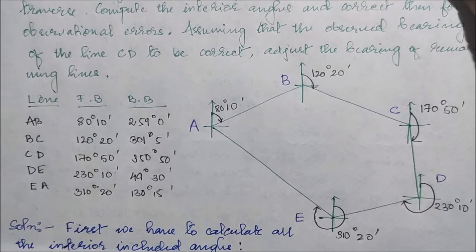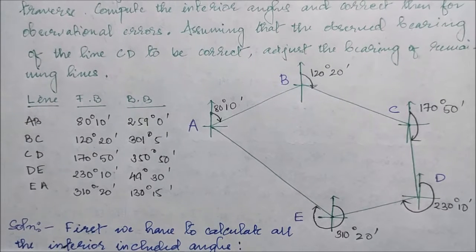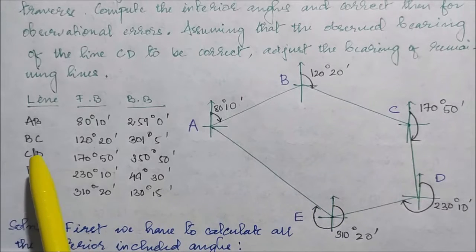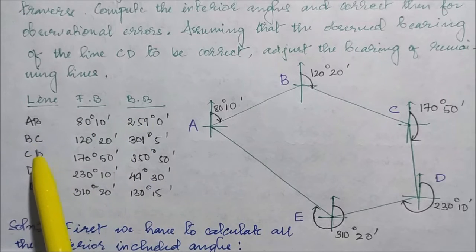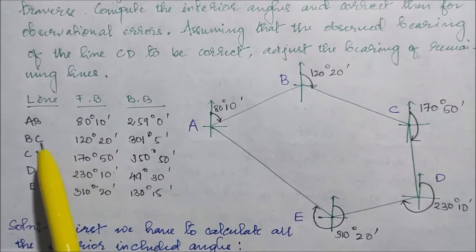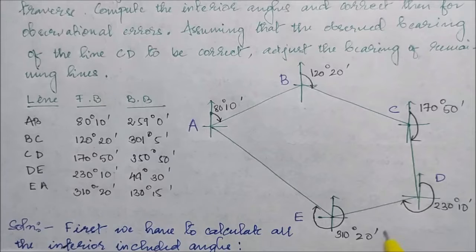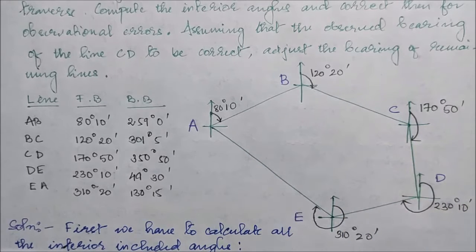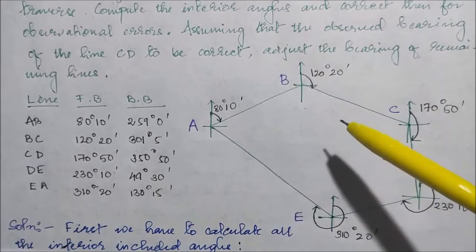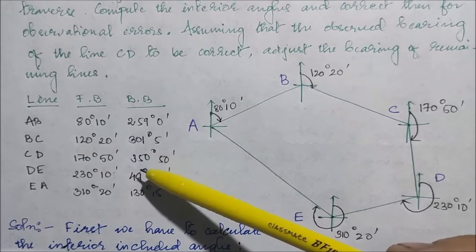In this particular problem, they have given us a closed traverse in which the fore bearing and the back bearing of lines AB, BC, CD, DE, and EA are clearly shown. The fore bearing and back bearing of each line has been given, and the figure has already been drawn accordingly. The main point is that you should be able to draw the figure by checking the bearings of the particular lines.